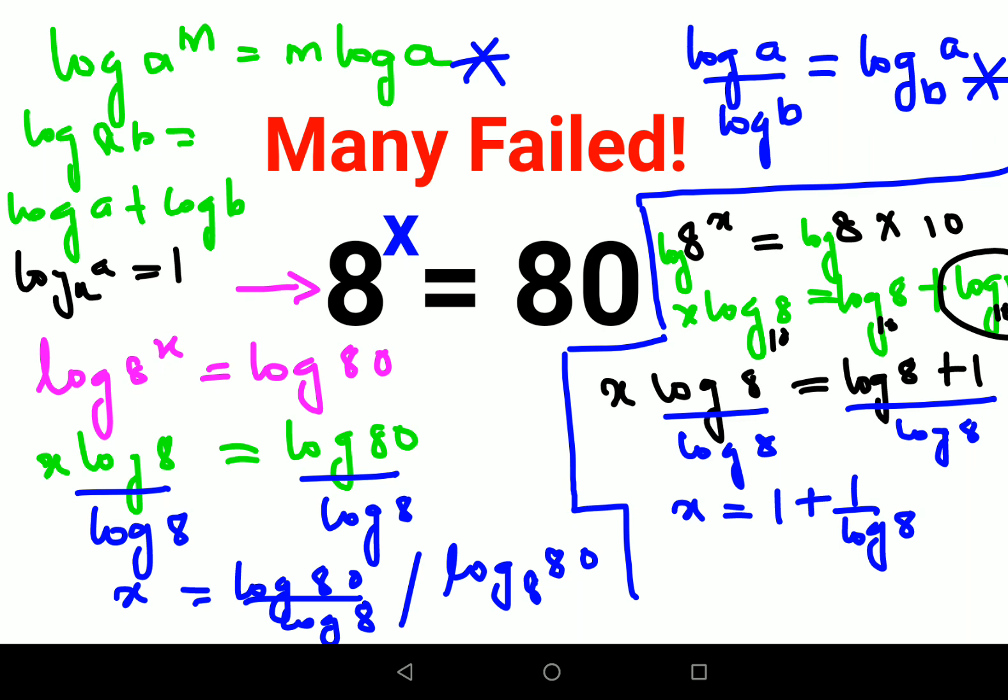Another thing is if they've already told you the value of log 8. So then in that case, when you do the final answer, you will realize that the value of X comes out to be 2.107.